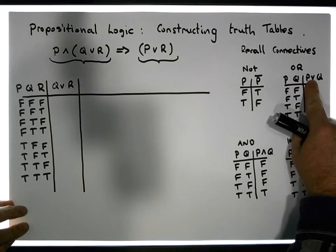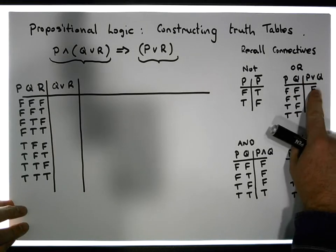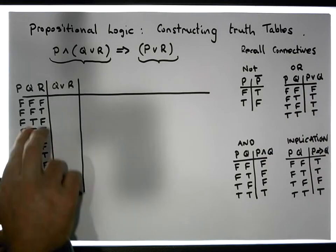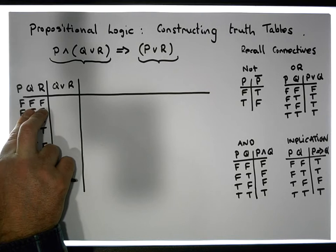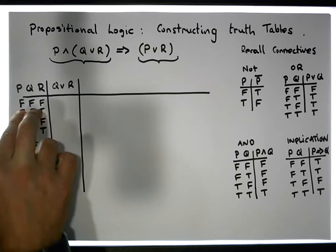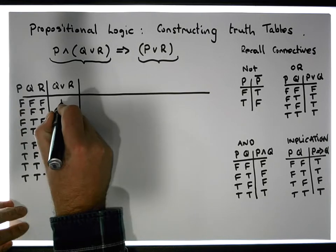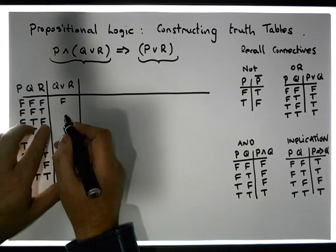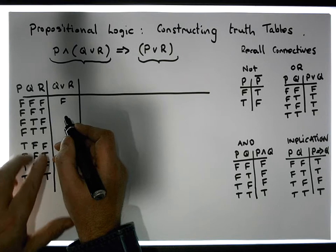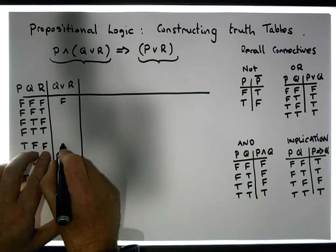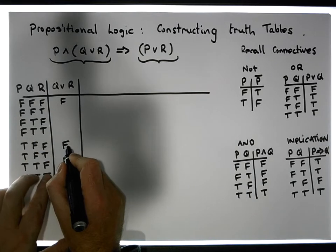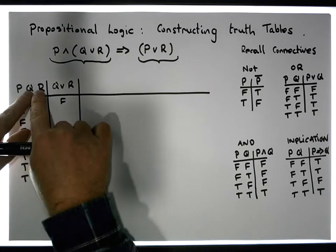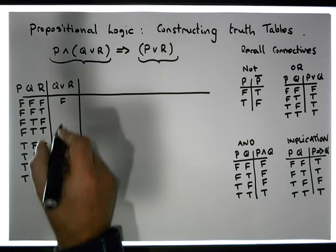An OR is only ever false when both inputs are simultaneously false. So here's where we've got two falses — it's false here, not here. Any other double falses? There is here. And there's no other double falses in these particular two columns.